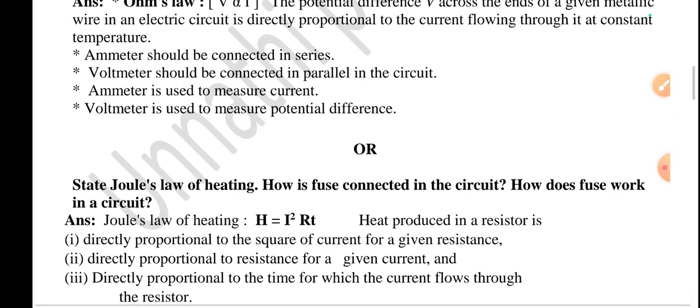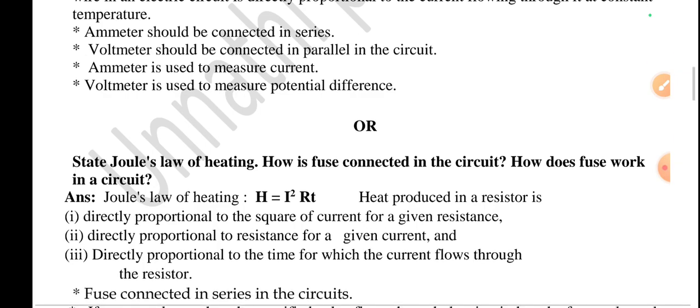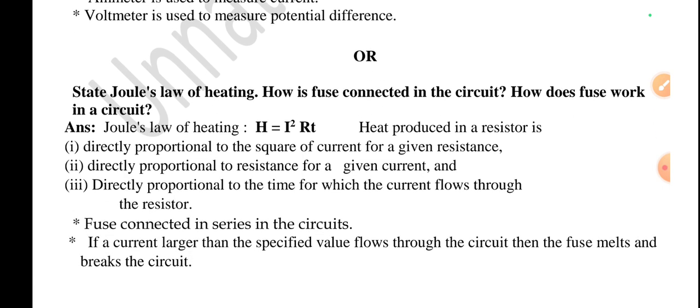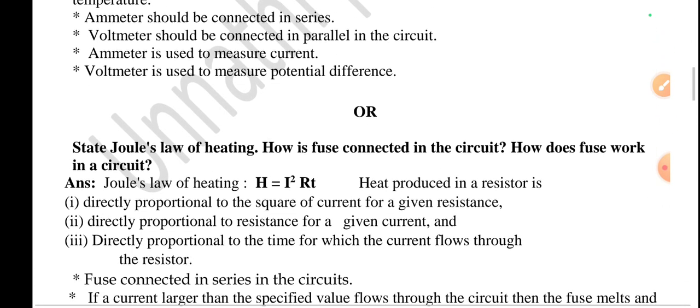Ammeter should be connected in series, voltmeter should be connected in parallel in the circuit. Ammeter is used to measure the current, voltmeter is used to measure potential difference. You have to write this.